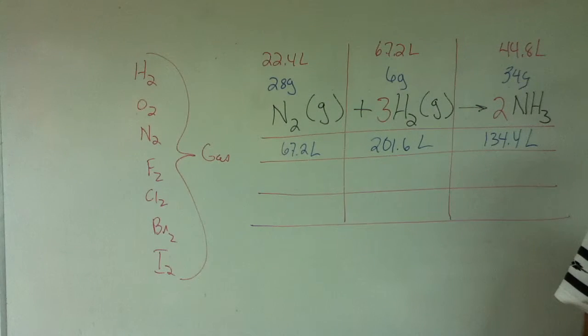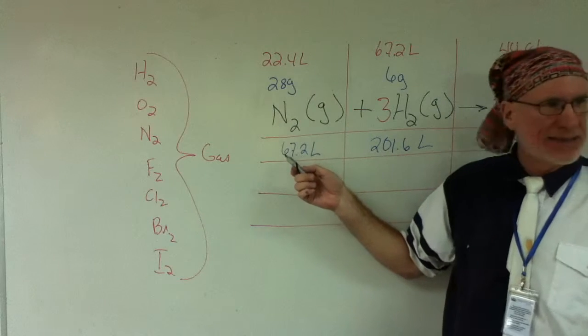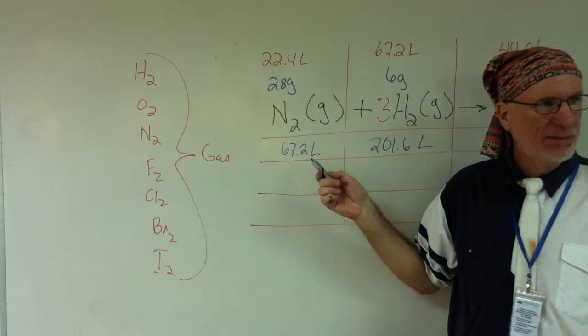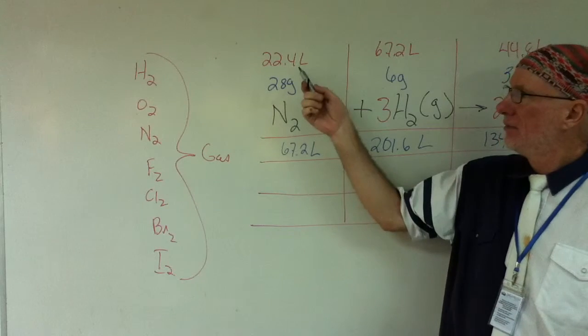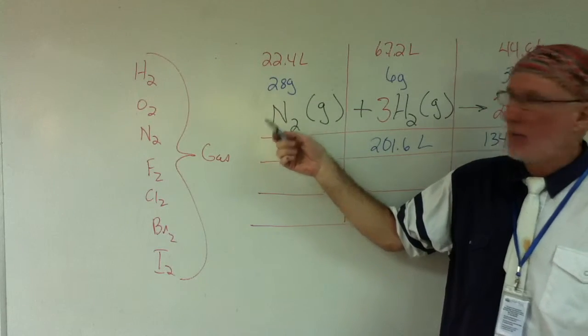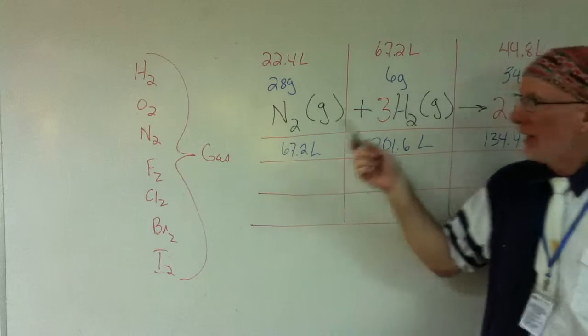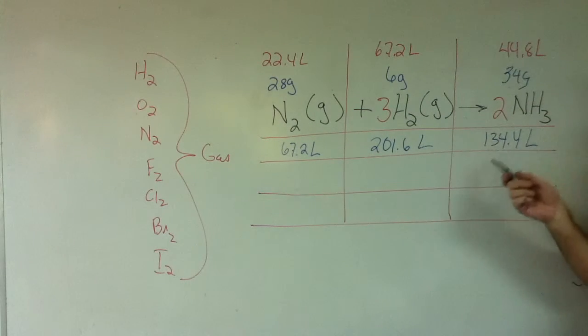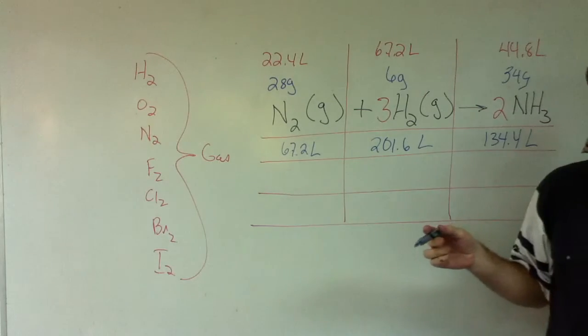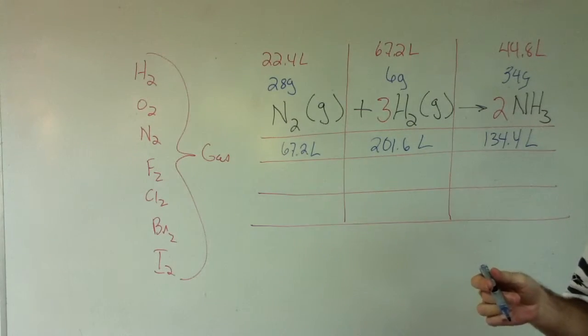So we don't times it by 2? You're using proportional relationships. That's what I'm trying to get across to you. In other words, I multiply... How did I get 67.2? Do you times 22.4 by 3? Yeah, because that's one mole.